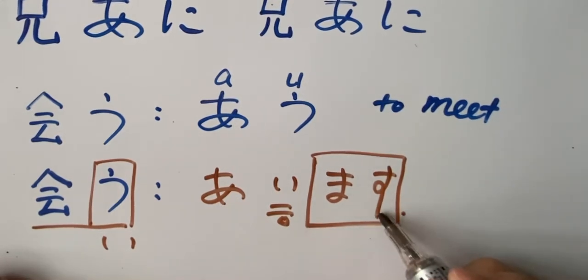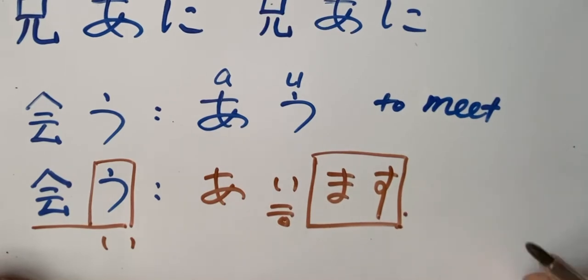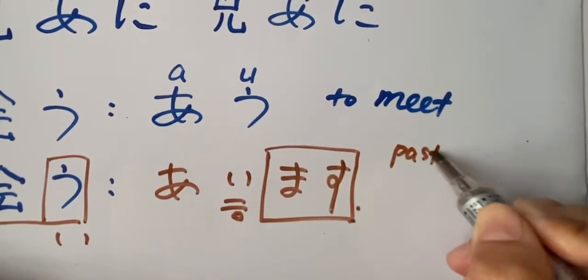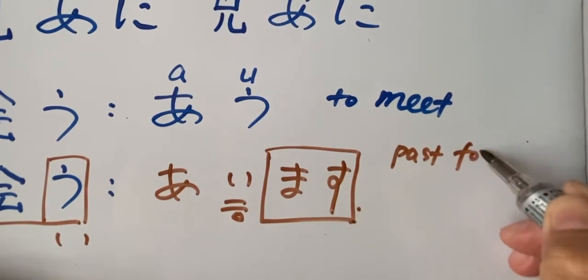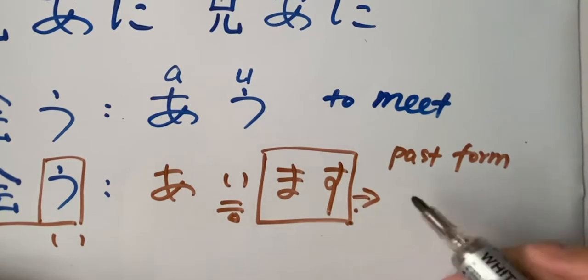And for masu, verb plus masu, for masu. If you want to change to the past form, past form. If something happened in the past. If you want to change to the past form, you change the masu to...